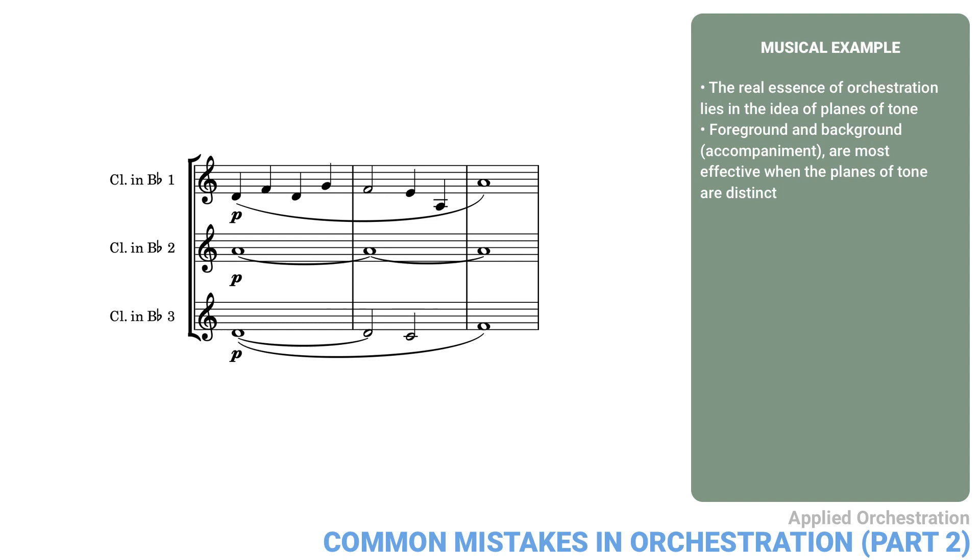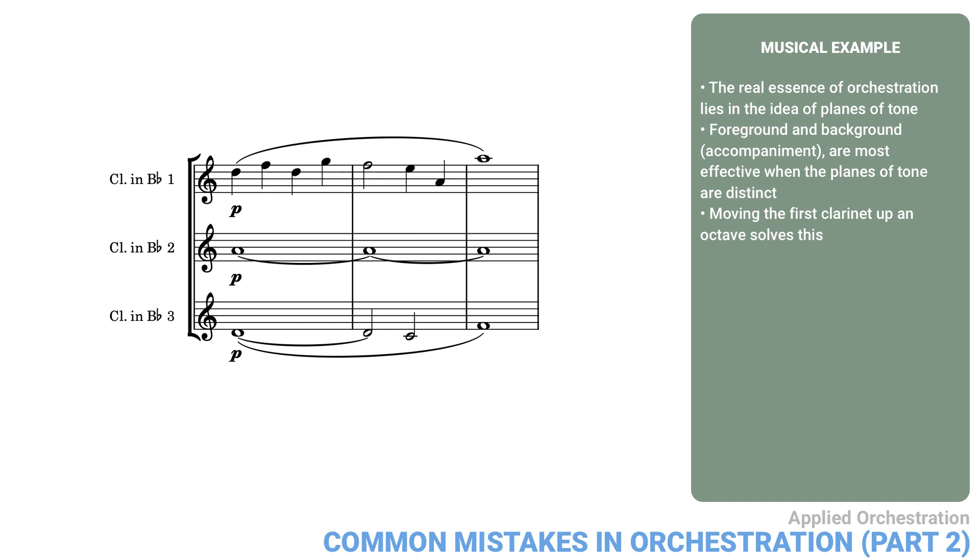This is even worse than our first example, since the accompanying harmony is in the same register and the same timbre as the main line. Simply moving the first clarinet up an octave solves this. In a different register, the ear has no problem distinguishing the melody from the accompaniment.